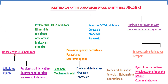Non-selective COX inhibitors are categorized based upon their molecular structure. The first group is salicylates, with the classical example being aspirin. Next are propionic acid derivatives; examples include ibuprofen, ketoprofen, naproxen, and flurbiprofen.